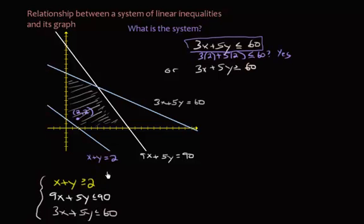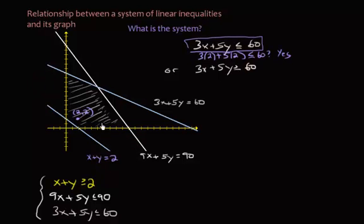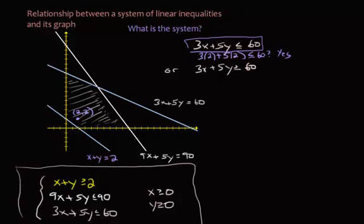So far this is my system, but notice that the shaded regions don't extend over here or down here. That means we have two additional restrictions. The shaded region is restricted to the first quadrant, which means x has to be greater than or equal to 0, and y has to be greater than or equal to 0. So as a complete system, this represents the graph shown.